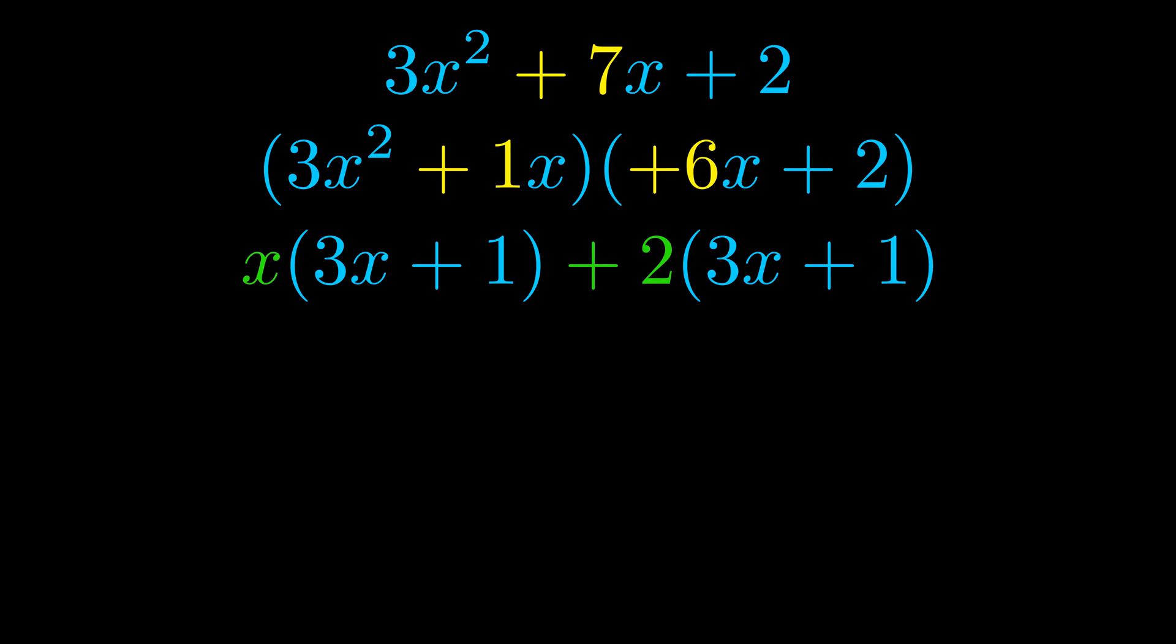Notice also how what remains inside the parentheses is the same in both cases. The blue values are the same. Those blue values will become one of our factors, and we will combine the two green values, the GCFs that we pulled out, to get the other one. And that is our fully factored equation.